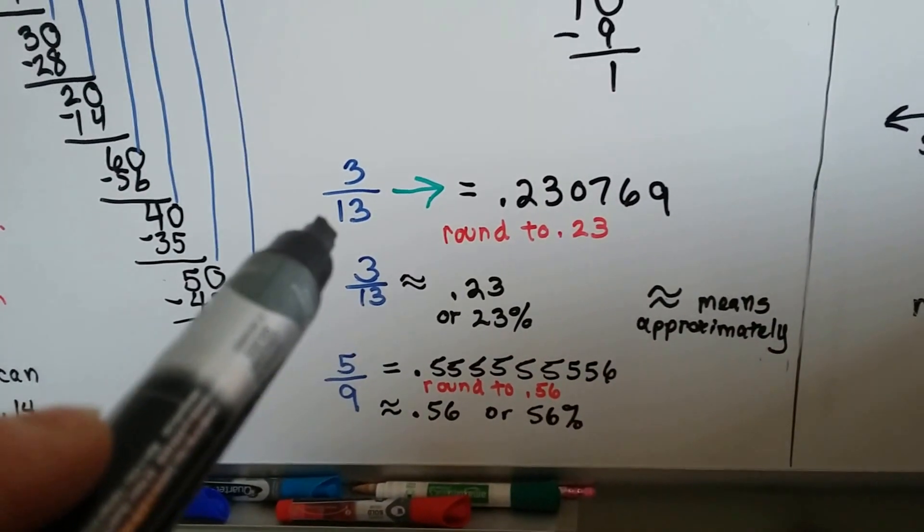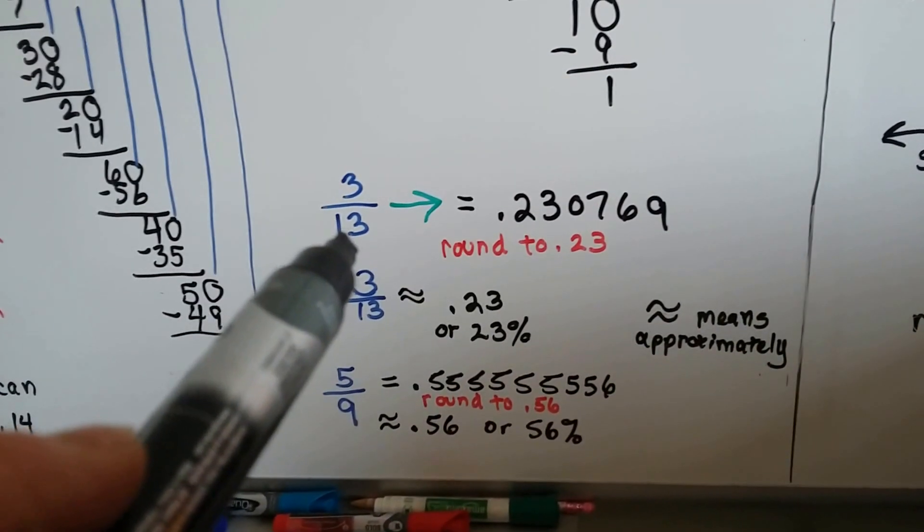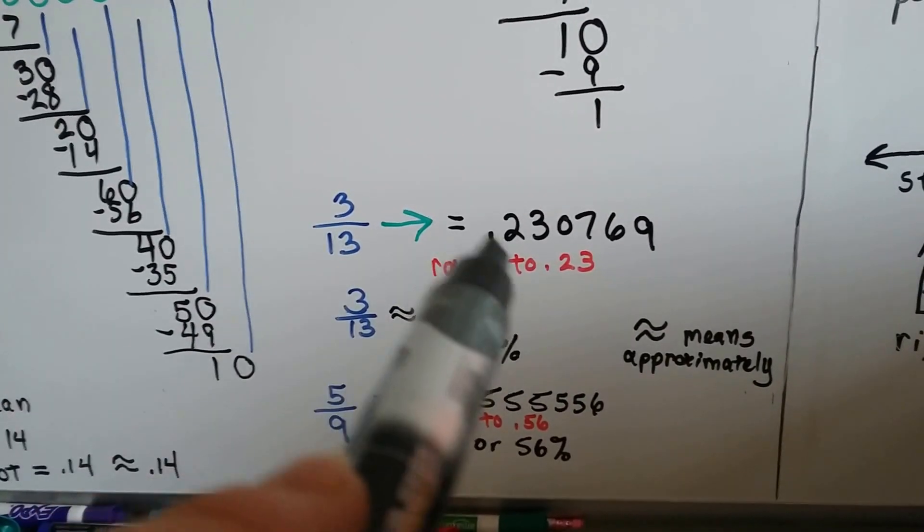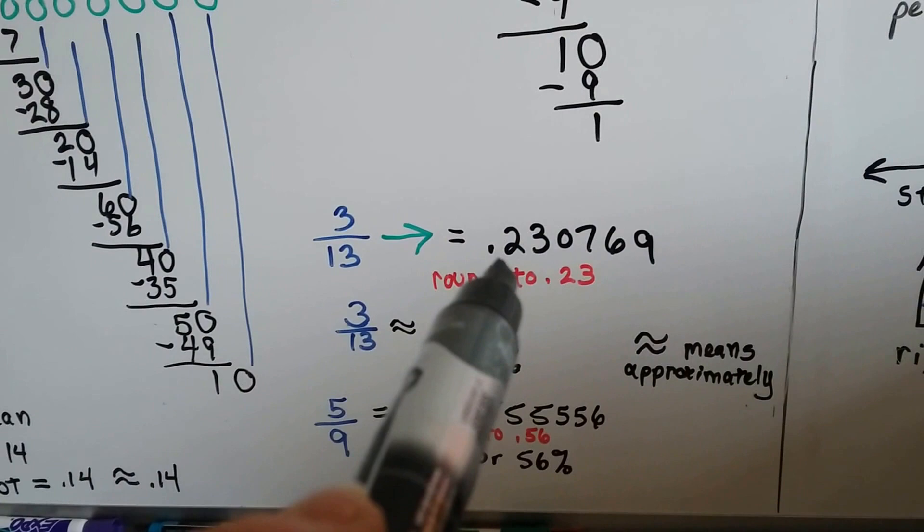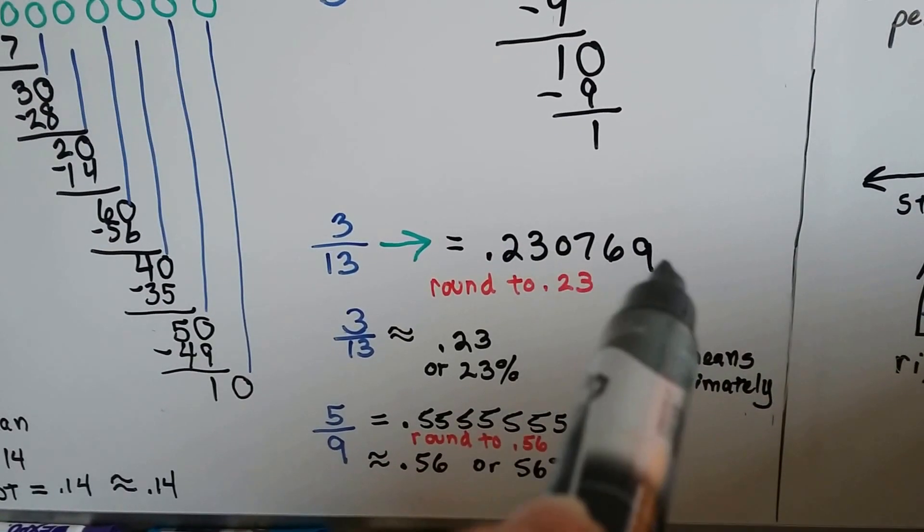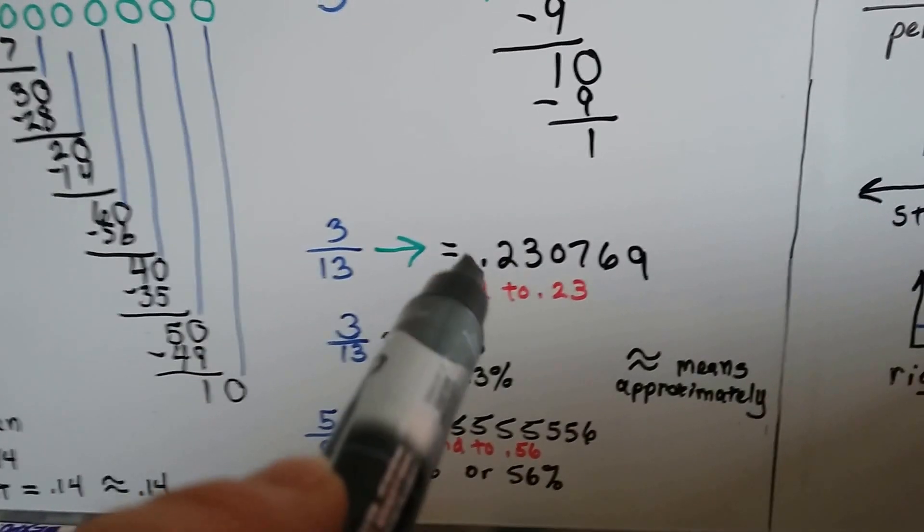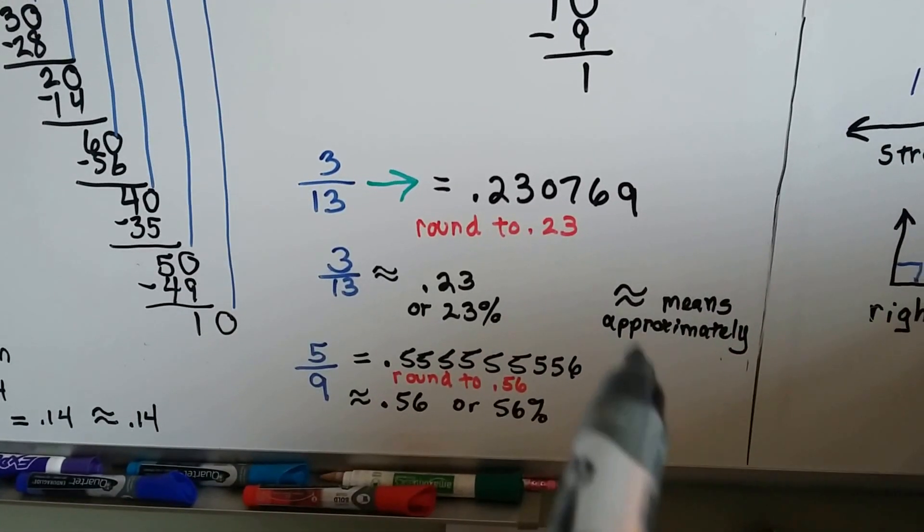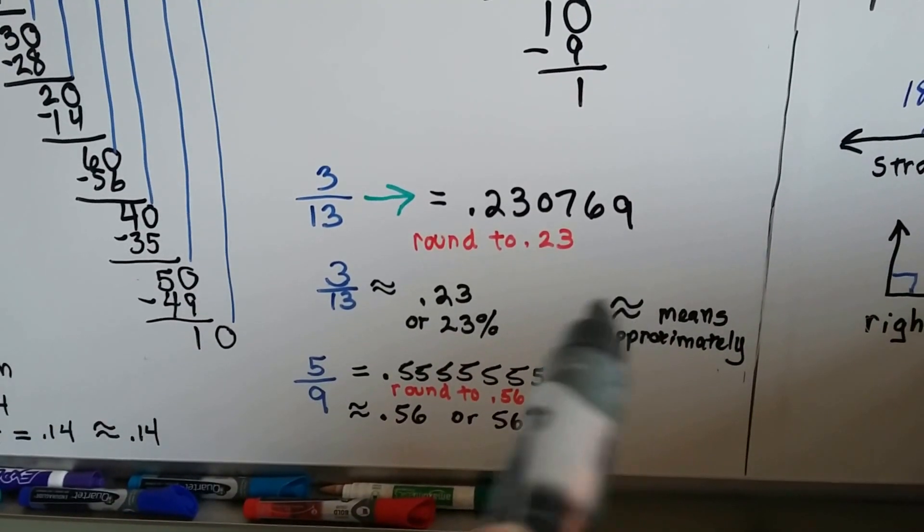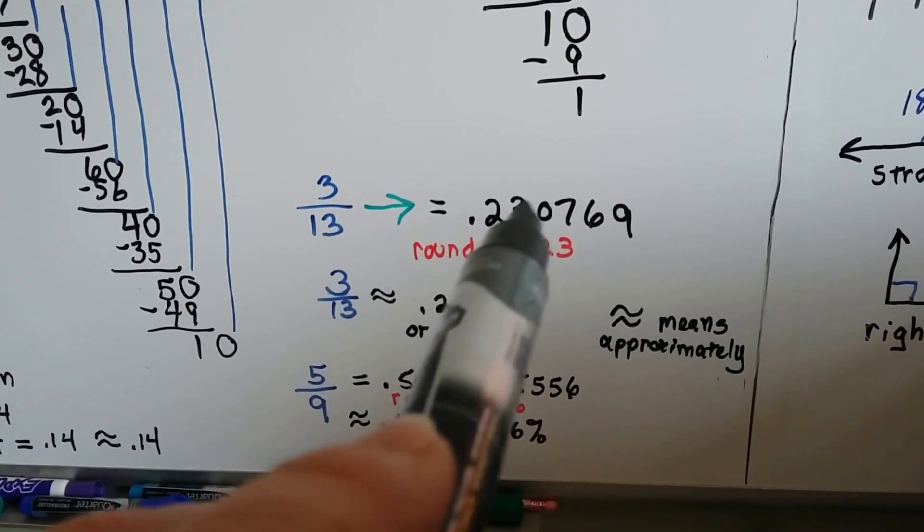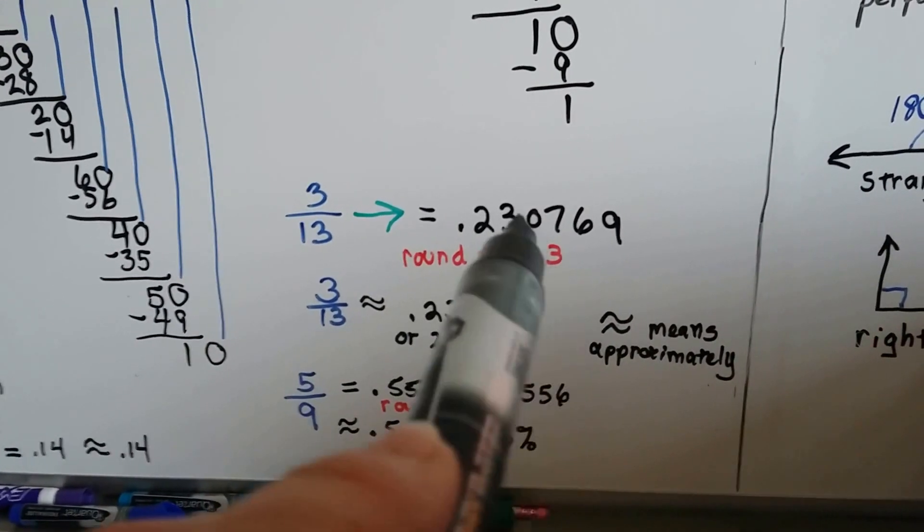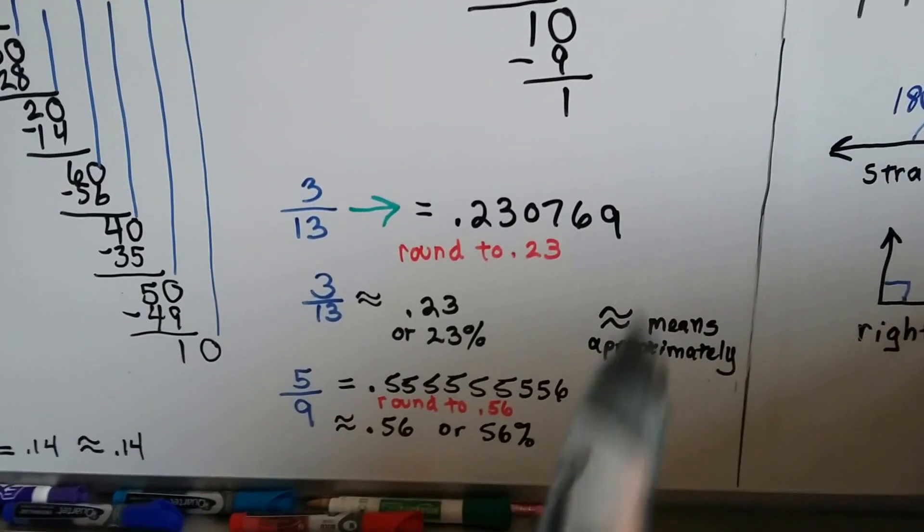So, if we have three-thirteenths, and we do the division and put thirteen into three-point-zero-zero-zero-zero-zero, what happens is we end up with point-two-three-oh-seven-six-nine. We can round this to point-two-three. But, if we do, we need to do the approximate sign, the wiggly sign. Because it doesn't equal that twenty-three-hundredths. It's approximately, because this is what it really equals.